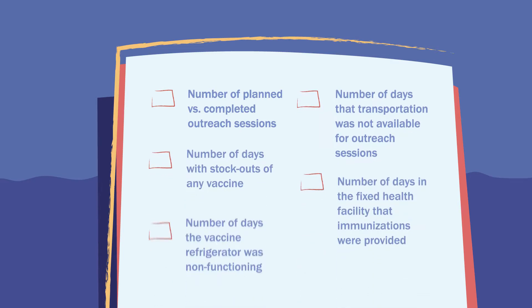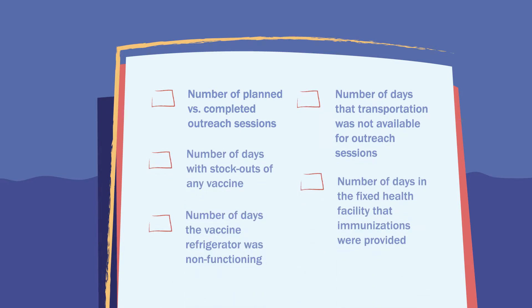Here are a few more process indicators that are often used: Number of planned versus completed outreach sessions. Number of days with stock-outs of any vaccine. Number of days the vaccine refrigerator was non-functioning. Number of days that transportation was not available for outreach sessions. Number of days in the fixed health facility that immunizations were provided.